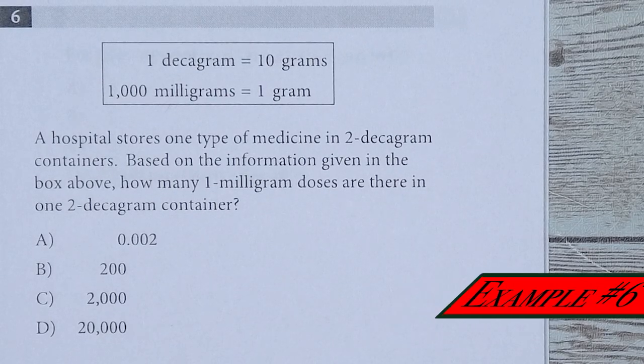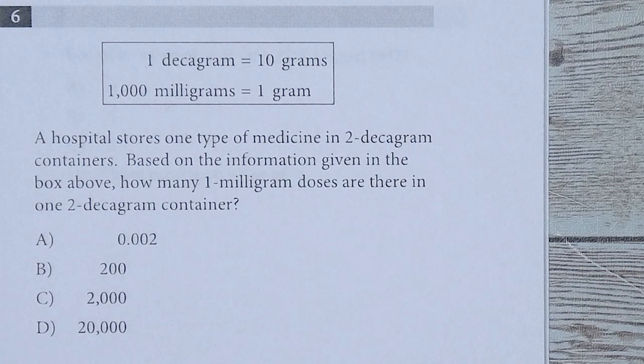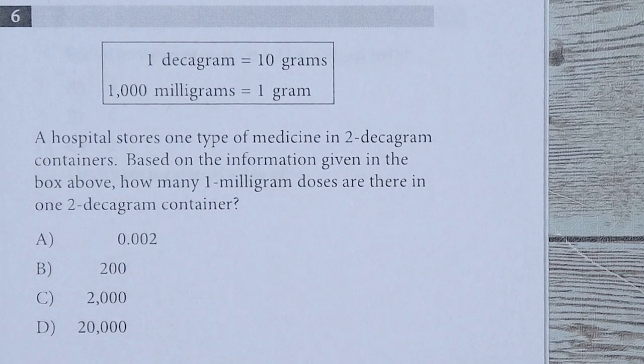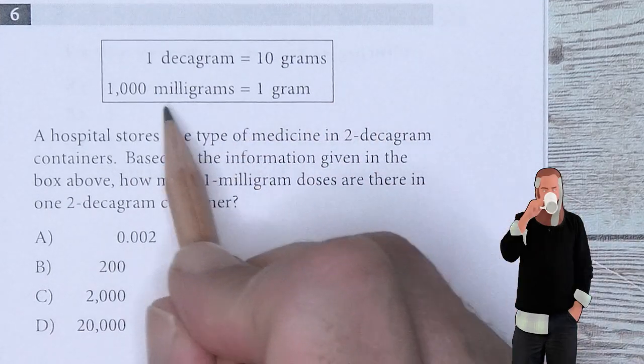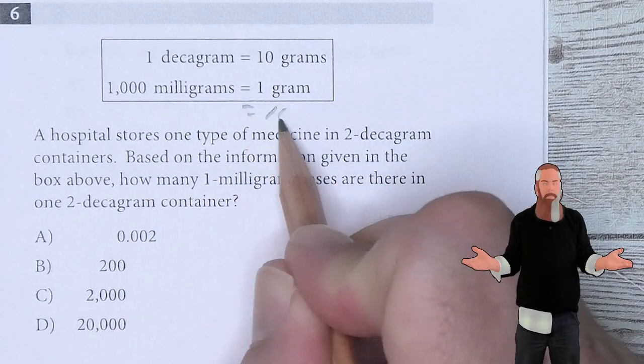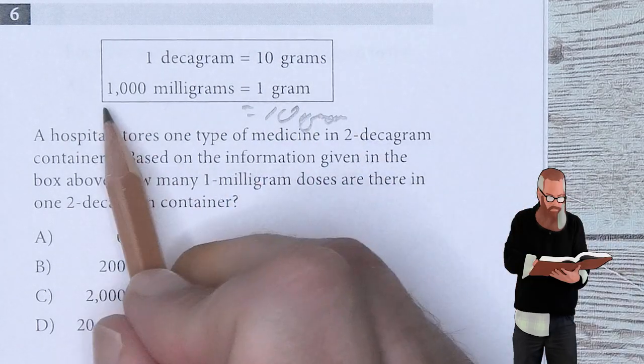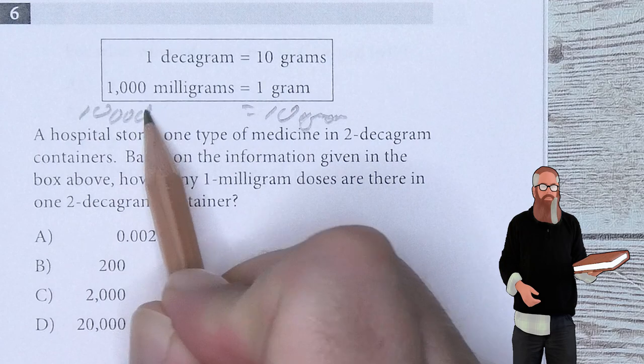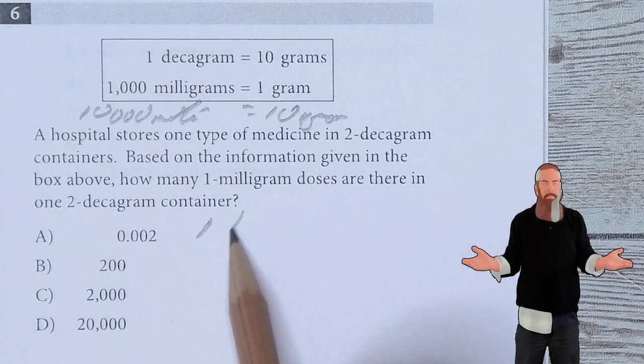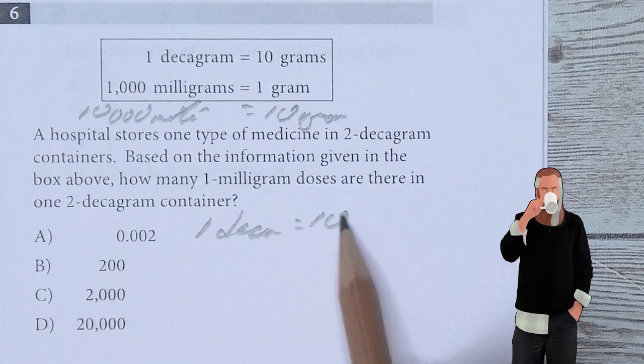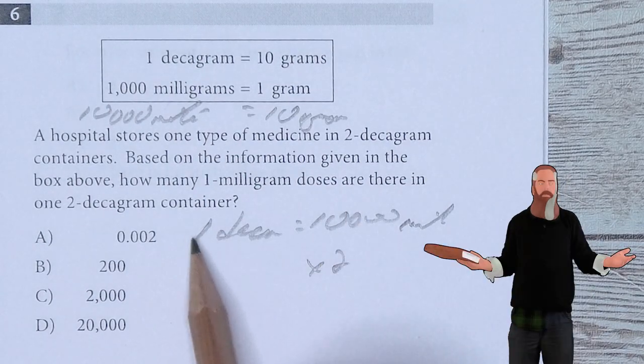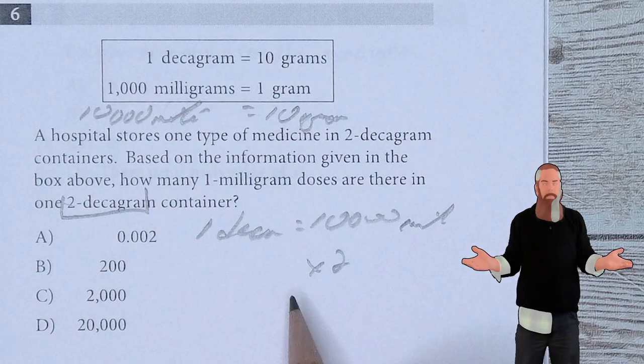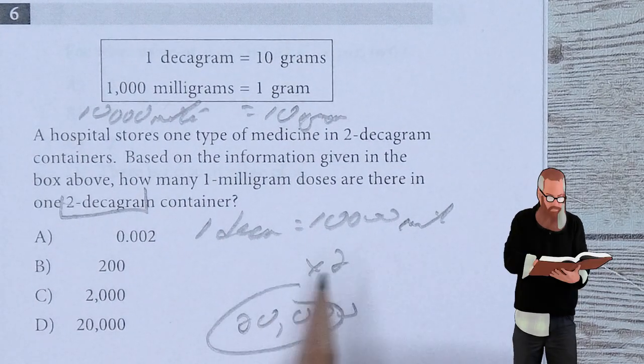A hospital stores one type of medicine in two decagram containers. Based on the information given in the box above, how many one milligram doses are there in one two decagram container? I'm going to multiply the bottom by 10, meaning 10 grams equals 10,000 milligrams. This means that one decagram would be equal to 10,000 milligrams. If I multiply that by two, then I'm going to wind up with 20,000. So D is the answer.